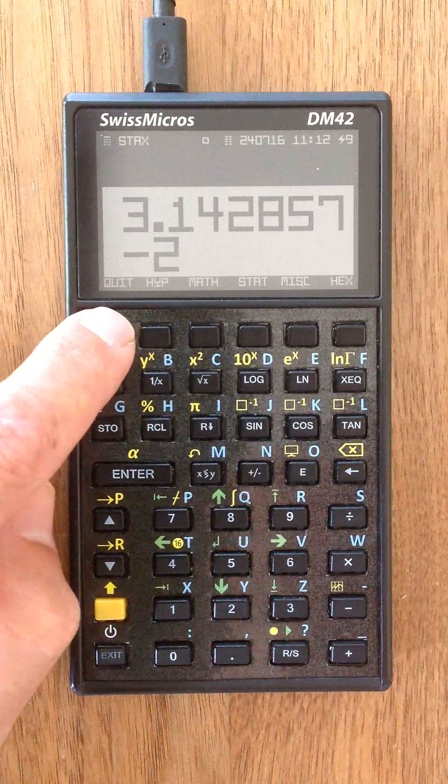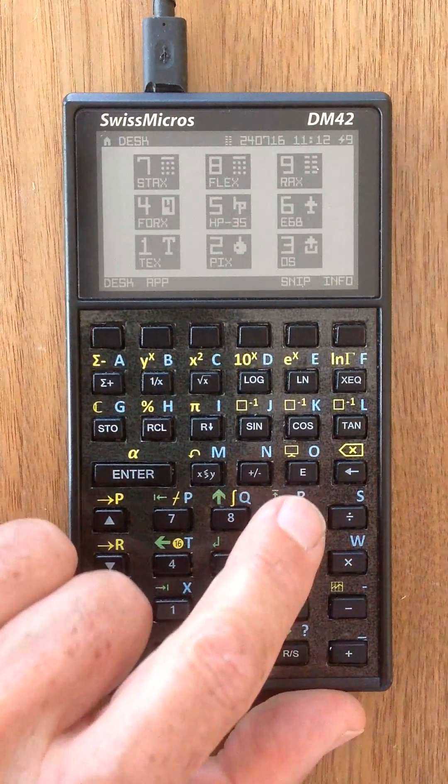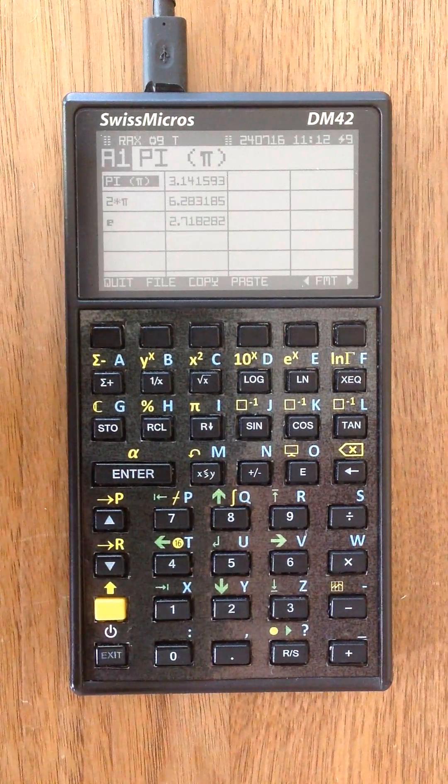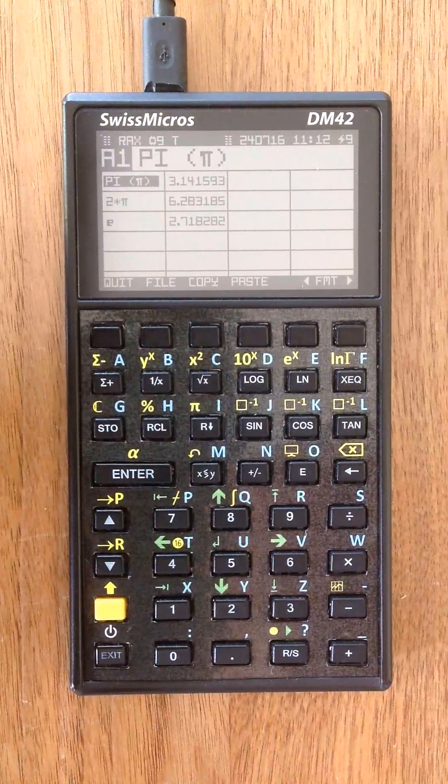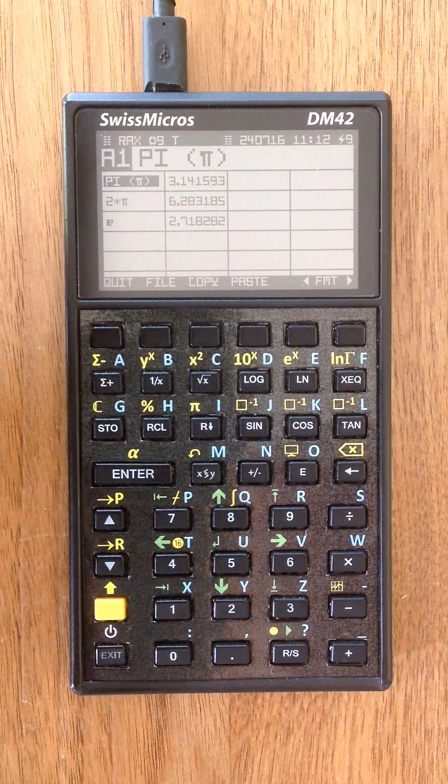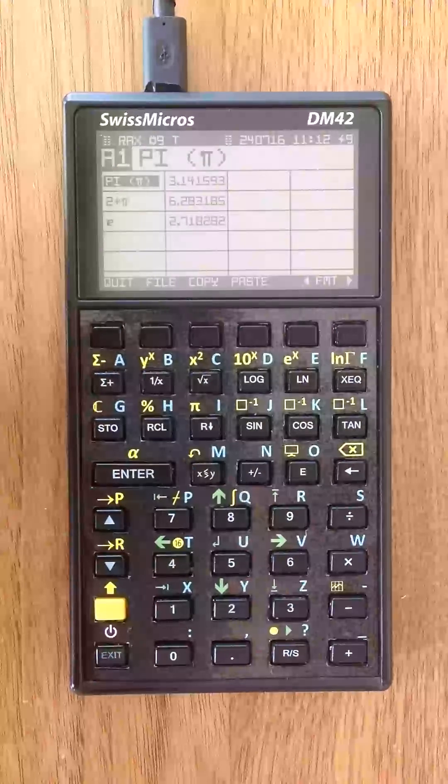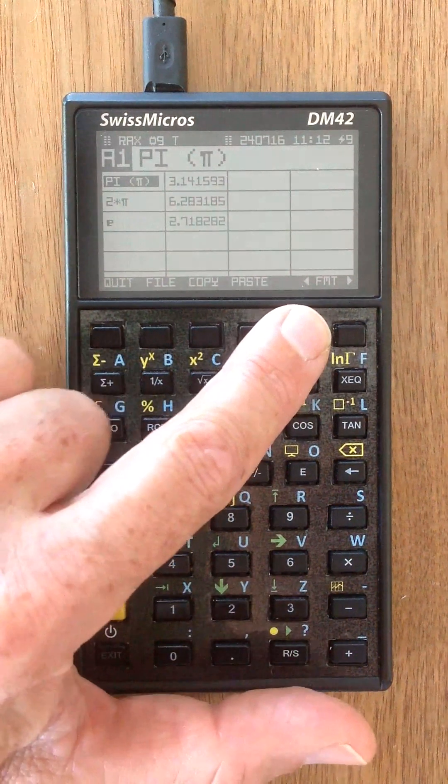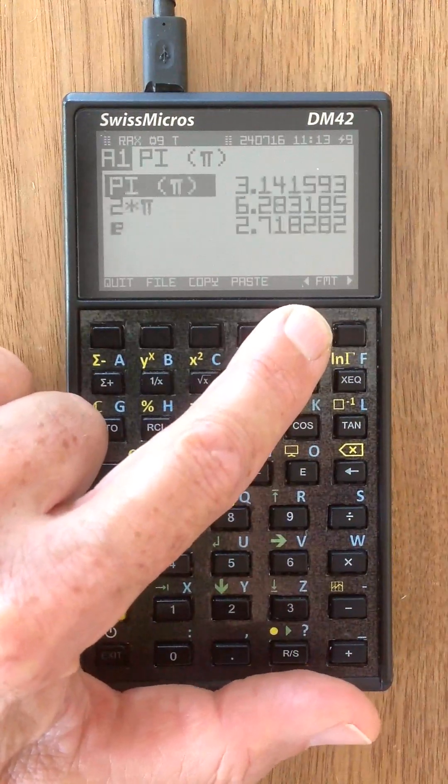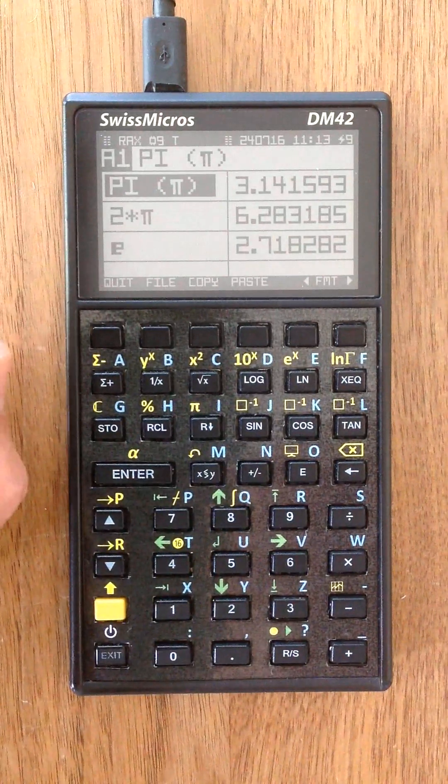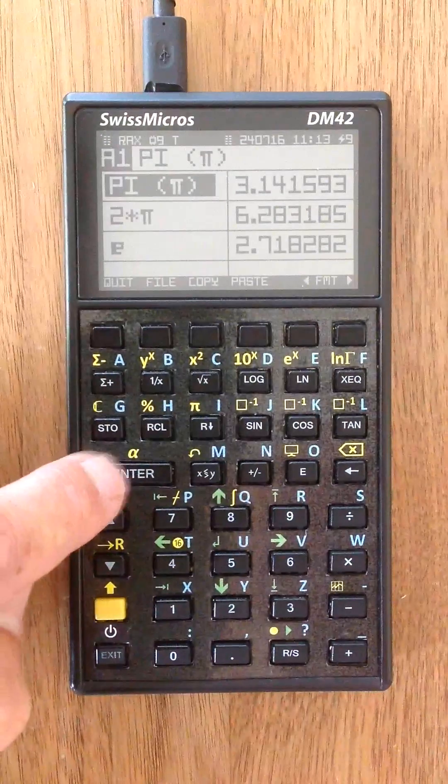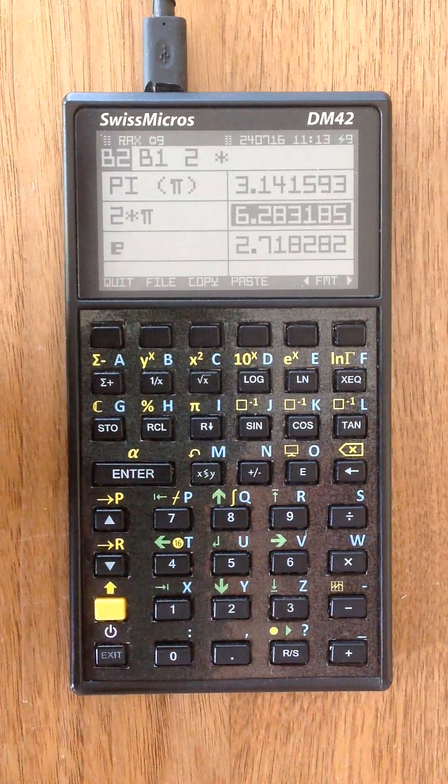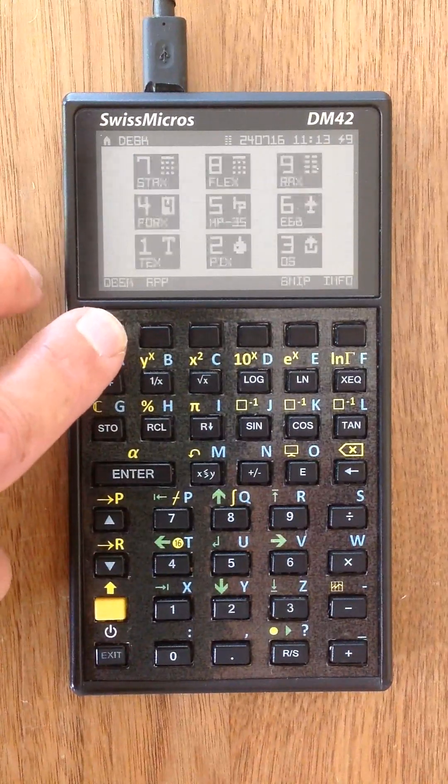The next application I'd like to show you is number nine REX. REX is a spreadsheet application. It's quite similar to the former application of mine, REX 42. Maybe you know it. But what comes really handy is to change the format of the spreadsheet. You can enter or edit text, enter numbers or formulas. So, that's the spreadsheet.